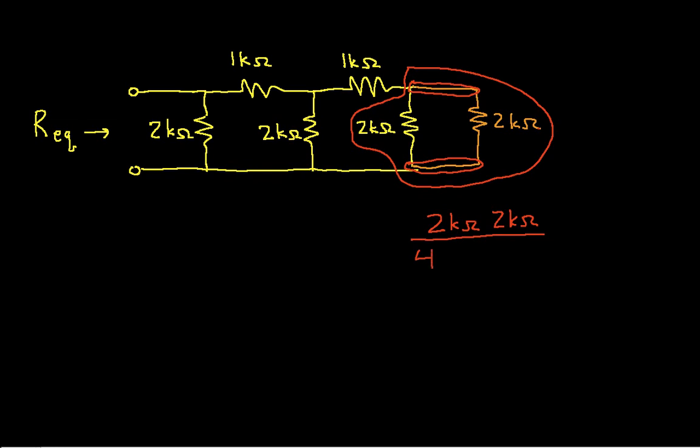The equivalent resistance of these parallel resistors would be the product of the resistances divided by the sum of the resistances.